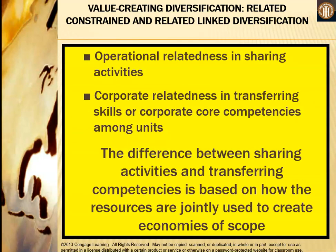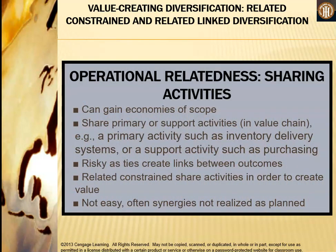Operational relatedness involves sharing activities — primary or support activities along the value chain. For example, a primary activity such as an inventory delivery system, or a support activity such as purchasing, can be shared among different companies. Sharing activities can generate economies of scope. It is risky, however, as ties create links between outcomes. Related constrained firms share activities to create value, but it is not easy — often synergies are not realized as planned.